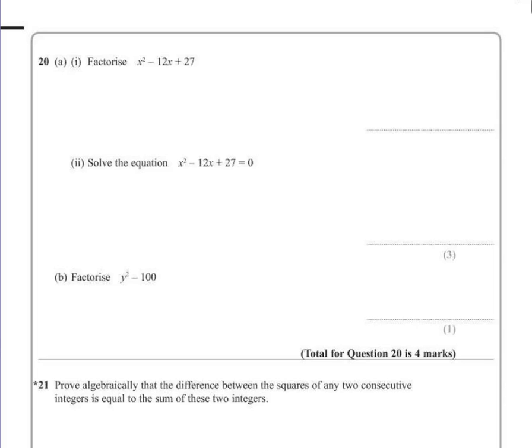Question 20a, part 1. Factorize x squared minus 12x plus 27. If we're asked to factorize, that means we're looking for brackets, and because we have x squared in there, we're dealing with a quadratic, which instantly tells me that I'm going to be needing two sets of brackets.